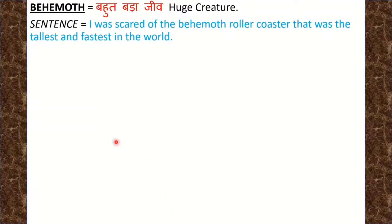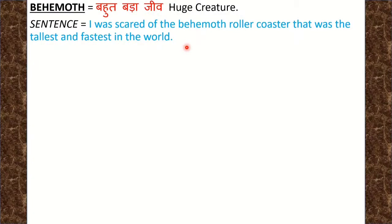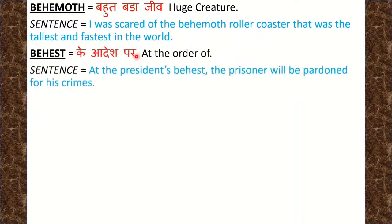Next word is Behemoth, meaning something enormous or gigantic. Sentence: I was scared of the behemoth roller coaster that was the tallest and fastest in the world. संसार का सबसे लंबा और सबसे तेज़ roller coaster मुझे एक बहुत बड़े जीव की तरह दिखाई दिया और मैं उससे डर गया.